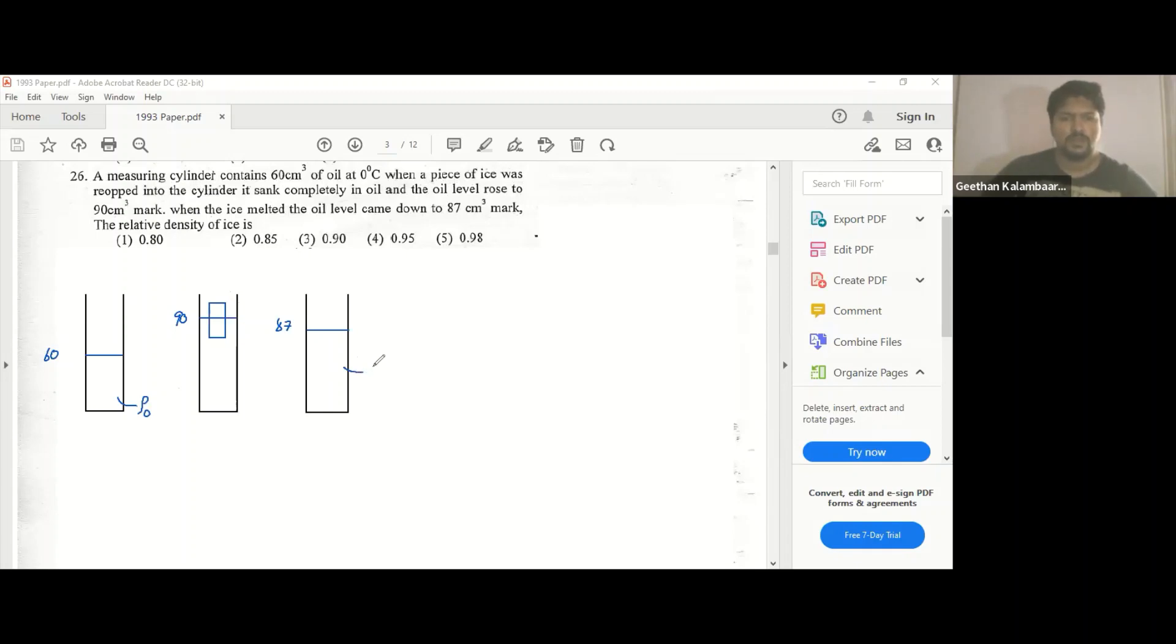So in this system what you have is water plus ice. Think about this, initially you had 60 cubic centimeters of oil, now you have 87 cubic centimeters of water and oil. So what's the volume of water?